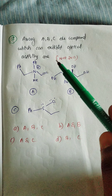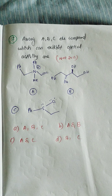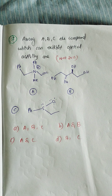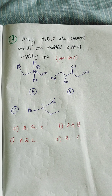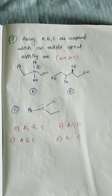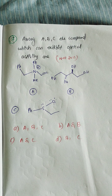Next question from 2011: among compounds A, B, C, which can exhibit optical activity? Three compounds are given and we have to determine which show optical activity based on whether a chiral center is present.